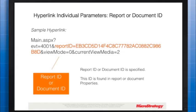Second is the ID of the report or document — the unique identifier of the report or document to which you are linking. You can easily obtain a report or document's ID from its properties. If your destination is a report, use reportID=objectID. If your target is a document, use documentID=objectID, where the object ID is the document's unique identifier, as illustrated on screen.